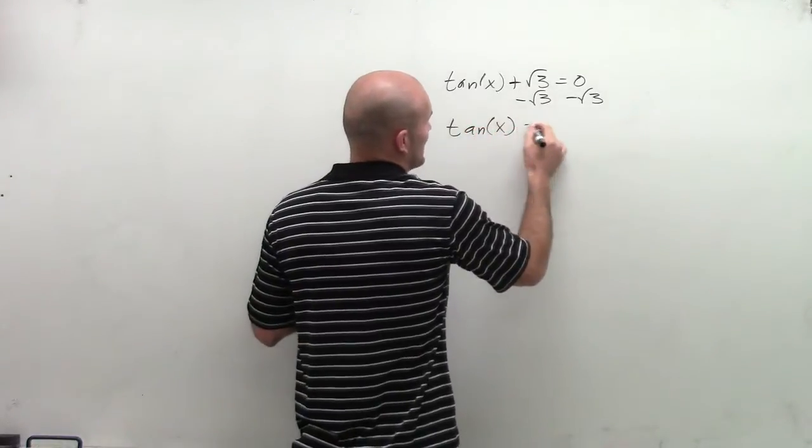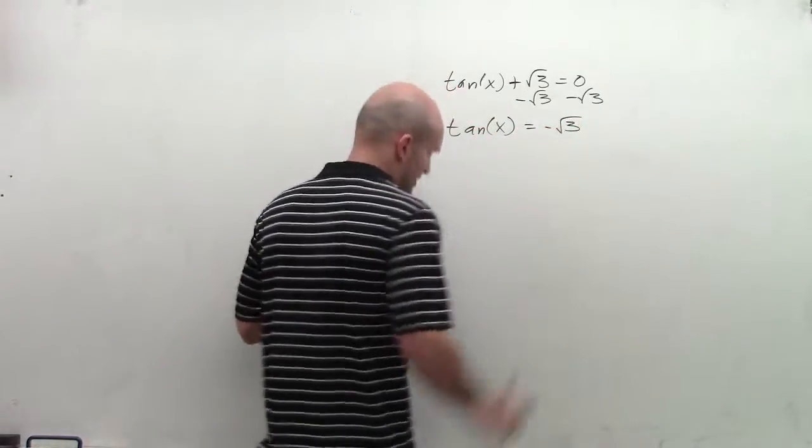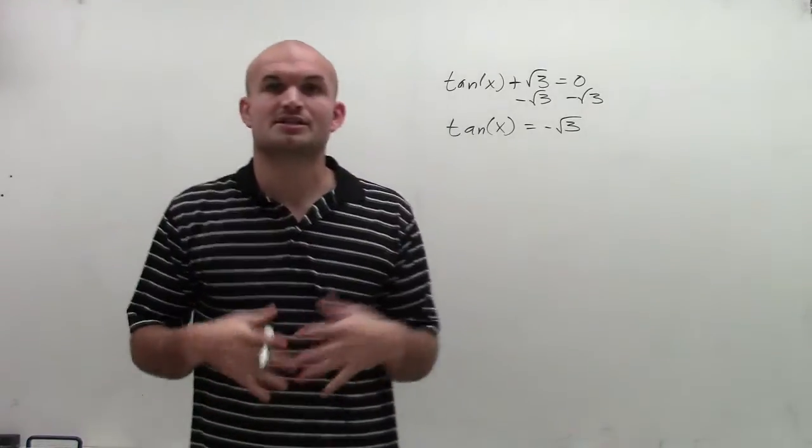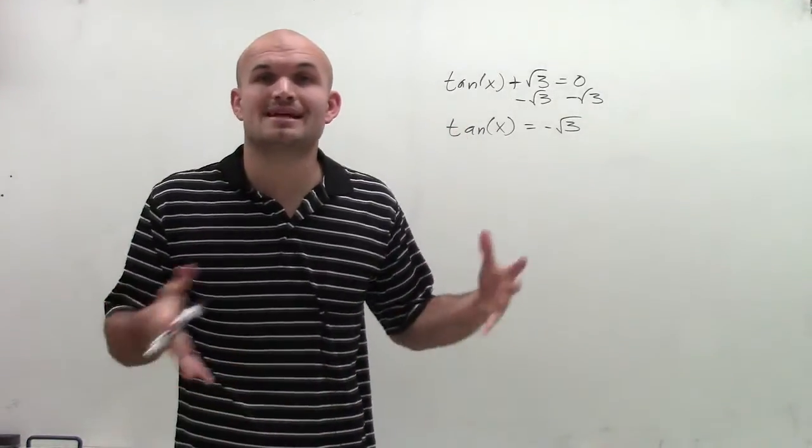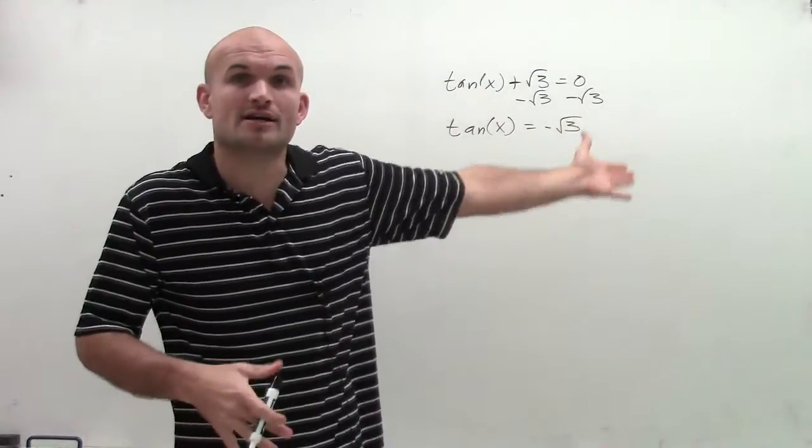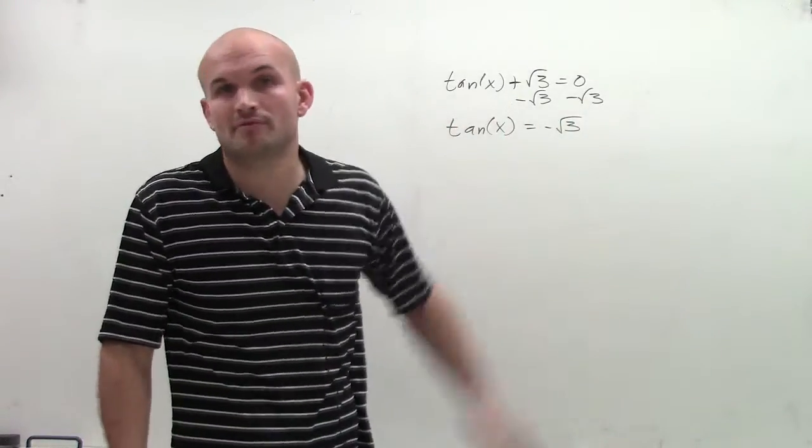Therefore, now I have tan of x equals negative square root of 3. So what I want to do to find the values of x that are going to make this equation true. What I need to do is figure out what values of x for tangent are equal when we have the negative square root of 3.